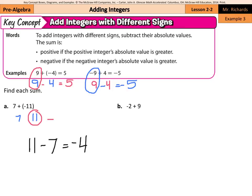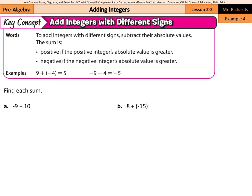What about negative 2 plus 9? Our absolute values are 2 and 9, and the 9 is larger — that represents the positive number, so our answer is positive. 9 minus 2 is 7, so the answer is positive 7. Similarly, negative 9 plus 10: the larger absolute value is 10, so 10 minus 9 is 1, answer is positive 1.